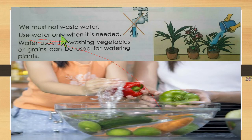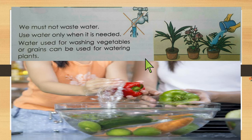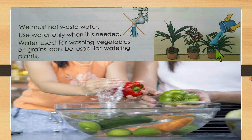We must not waste water. Use water only when it is needed. Water used for washing vegetables or grains can be reused for watering plants. Water is very important for our life, so don't waste it. If a tap is leaking, fix it as soon as possible. I hope all of you understand this lesson.